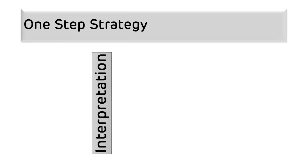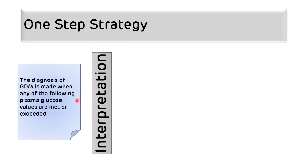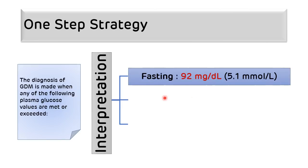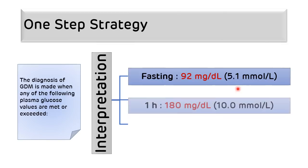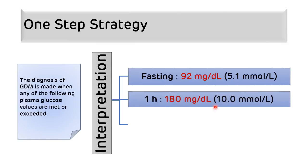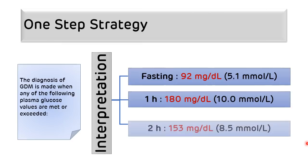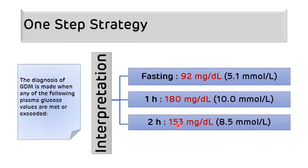For interpretation of the one-step strategy results, the diagnosis of gestational diabetes mellitus is made if any of the following plasma glucose values are met or exceeded: fasting blood glucose more than or equal to 92 mg/dL, or one-hour blood glucose more than or equal to 180 mg/dL, or two-hour blood glucose more than or equal to 153 mg/dL.